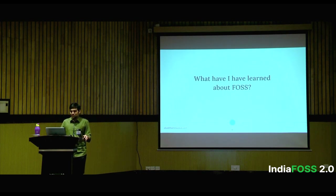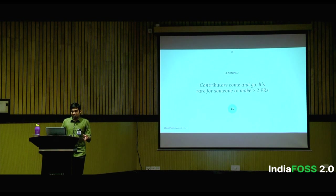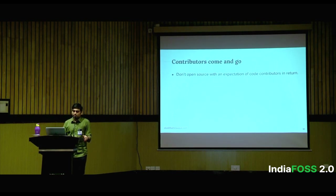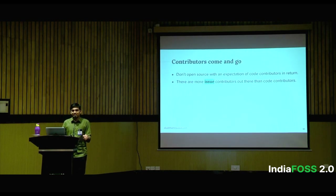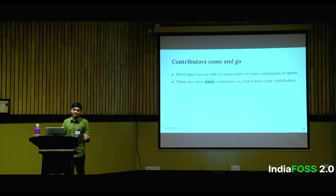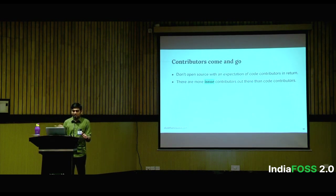What have I learned about FOSS from this whole Blaze project? The first learning is contributors come and go — it's rare for someone to make more than two PRs in a project. When people open-source a project, they often say you'll get contributors in return, but that's not the only motivation you should have. There are more issue contributors out there than code contributors. They'll gladly open issues in your repositories and then go away — if you ask for more details, they won't even respond. The person facing the issue is probably the best person who can also try to fix it.